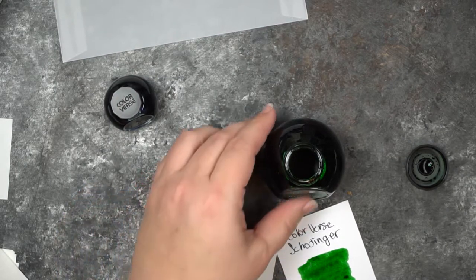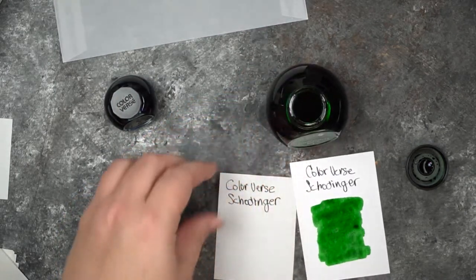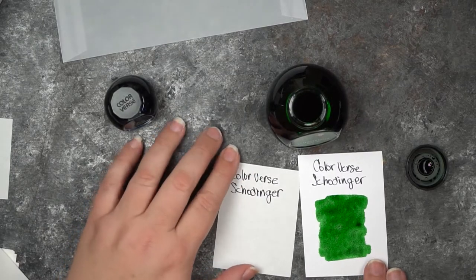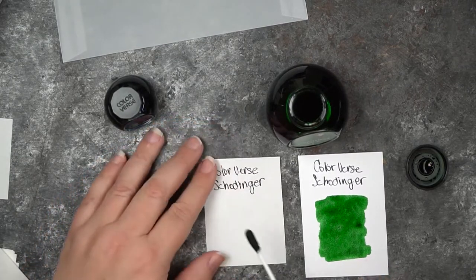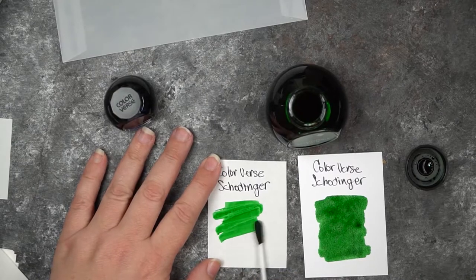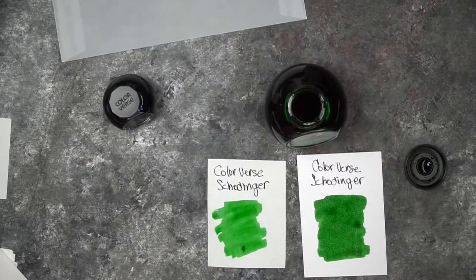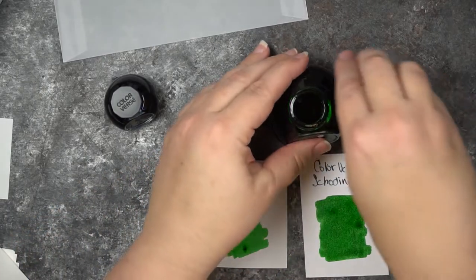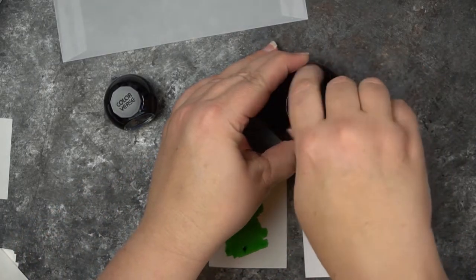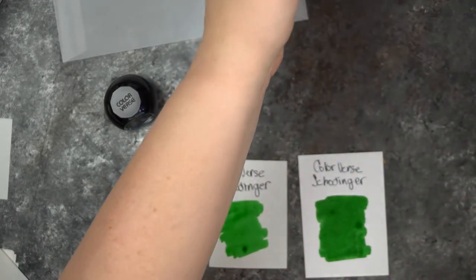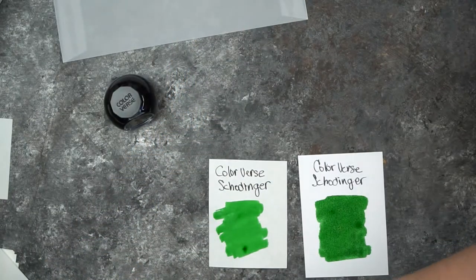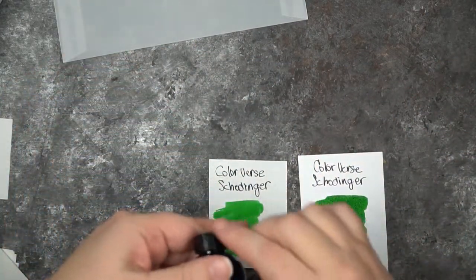You can see that's a really nice green color. I always like to swatch twice because I don't think you get the true color from card stock. So, there's the Schrodinger's and then I will do the cat.